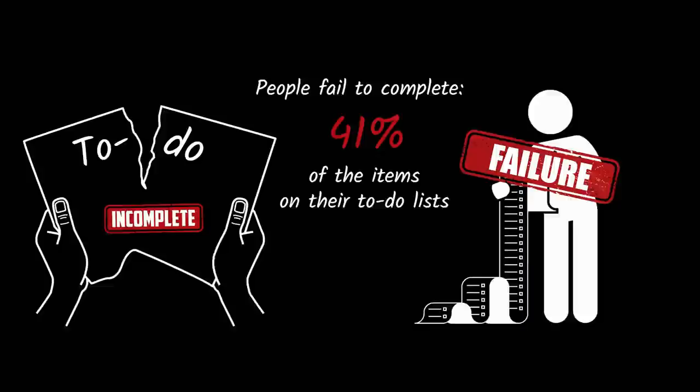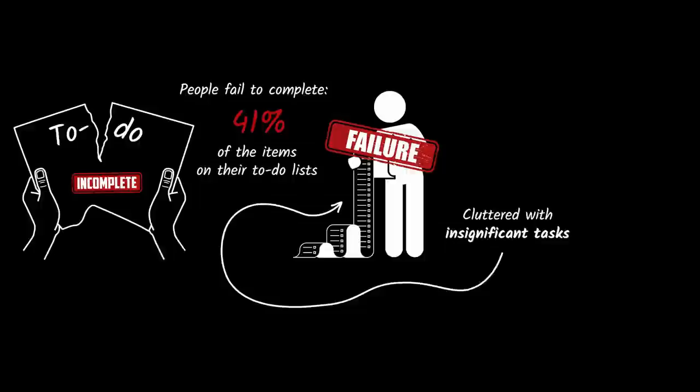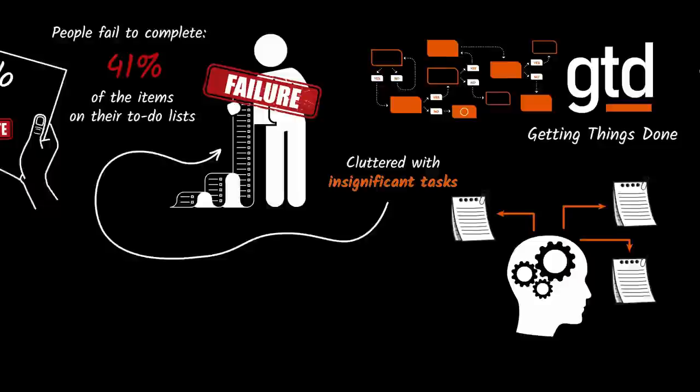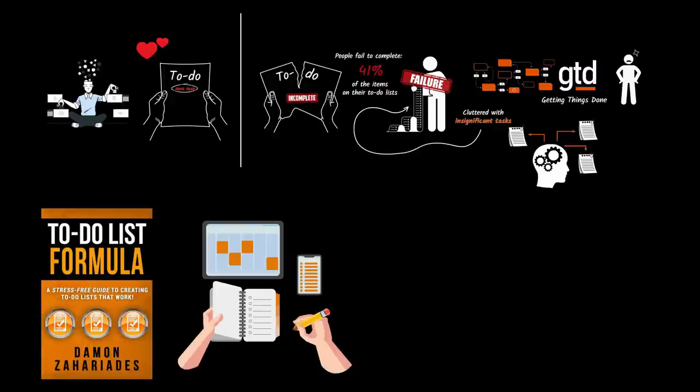I hate to-do lists because they get excessively long and cluttered with insignificant tasks. This last hate is a common complaint of people who try the popular GTD — Getting Things Done — system. GTD is an awesome to-do system for getting things out of your head and onto next action lists, but it's not great at differentiating between high and low value tasks.